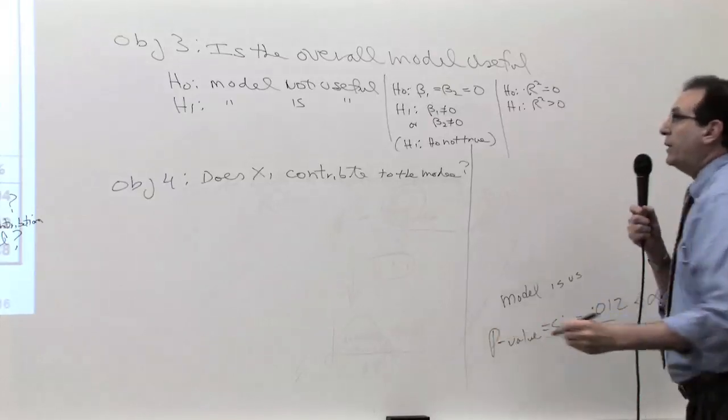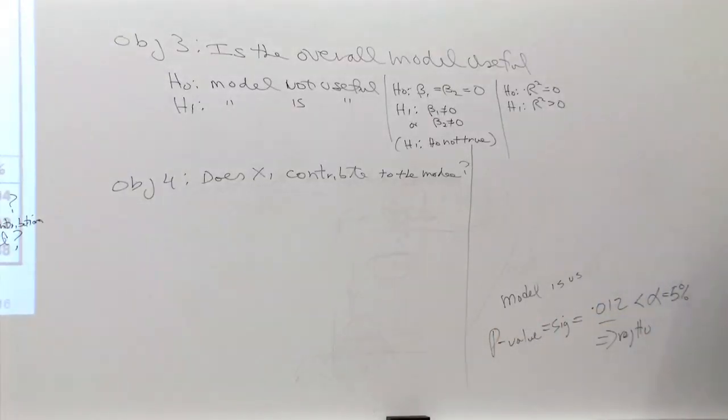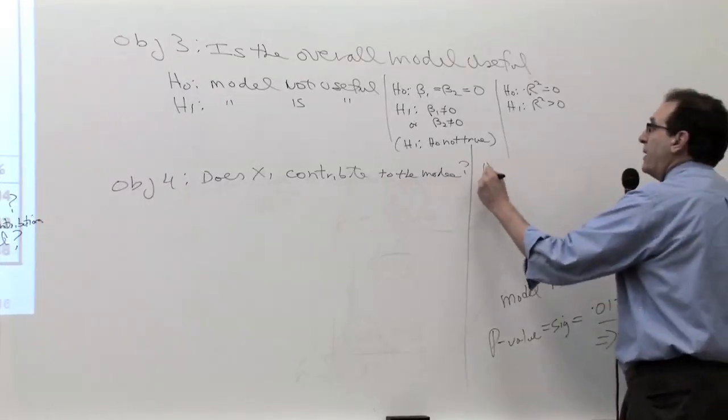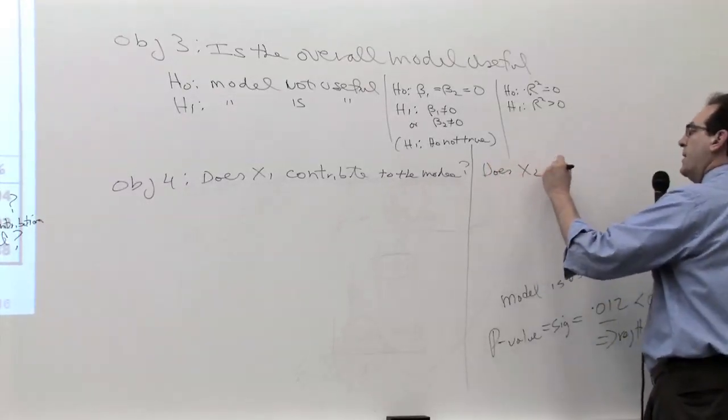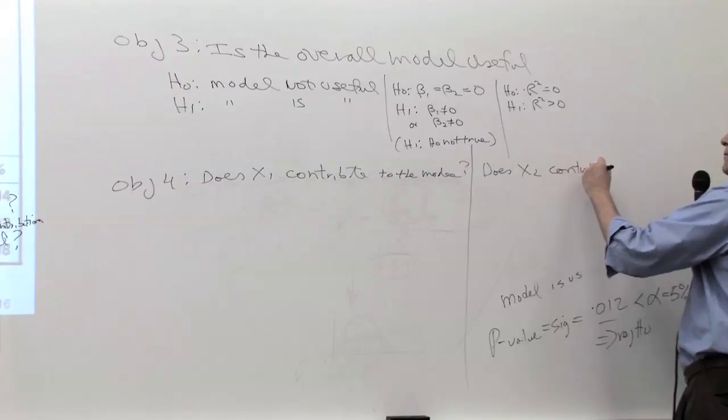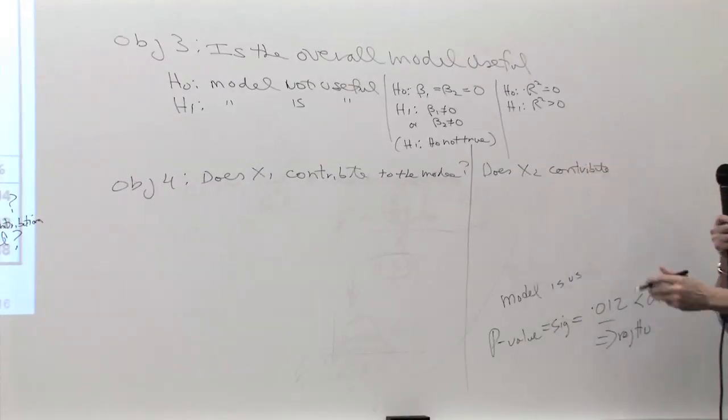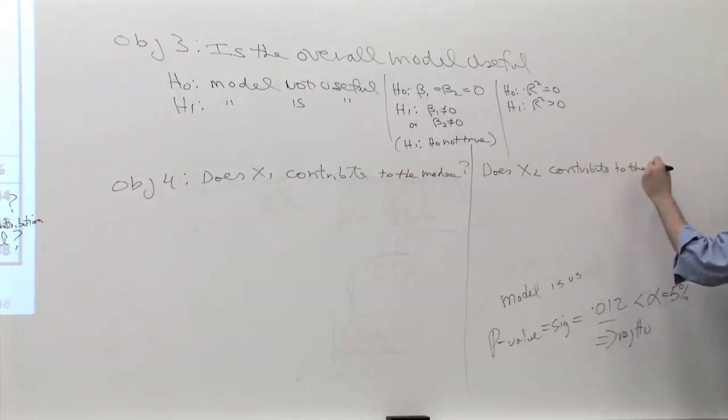And after we answer the question yes or no by hypothesis testing, what's going to be the next question after that? Very good, does X2 contribute to the model? And if it turns out, which it may be that way on the test, there were three of them, you got to do this a third time. Does X2 contribute to the model? But it turns out each one of them takes about 20 seconds. And again, this could be repeated for three and four and five and six and whatever other Xs you have in the equation.